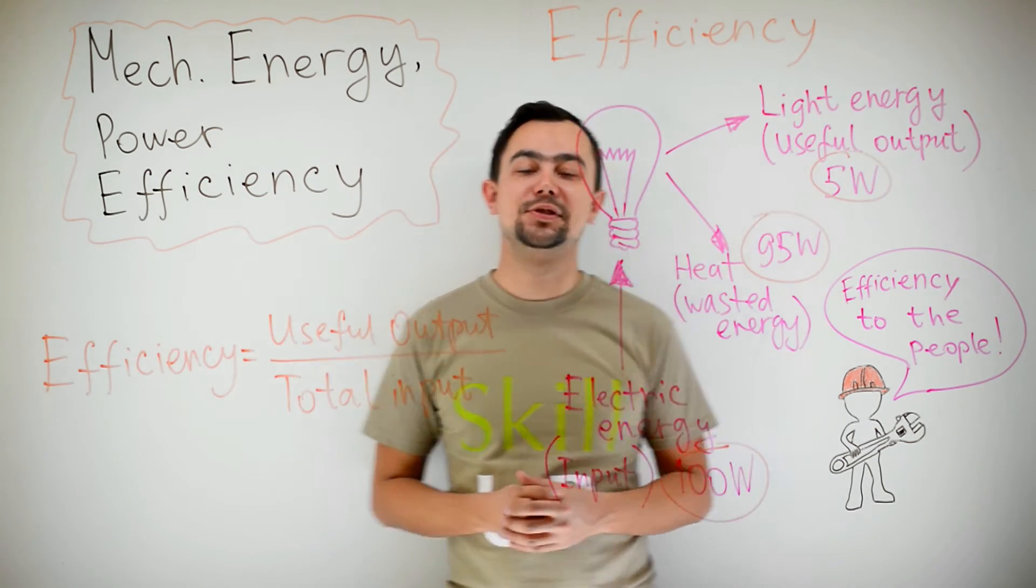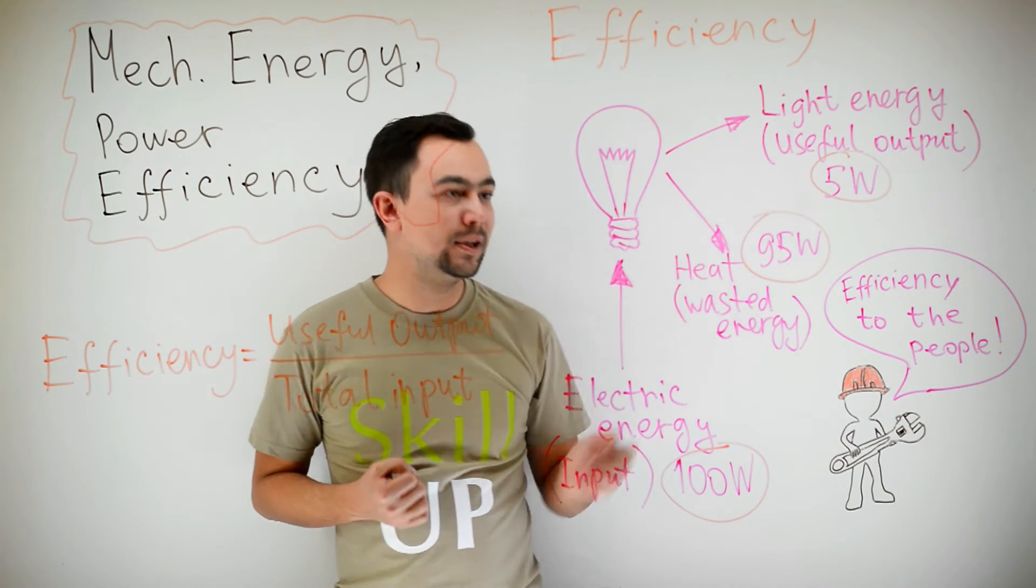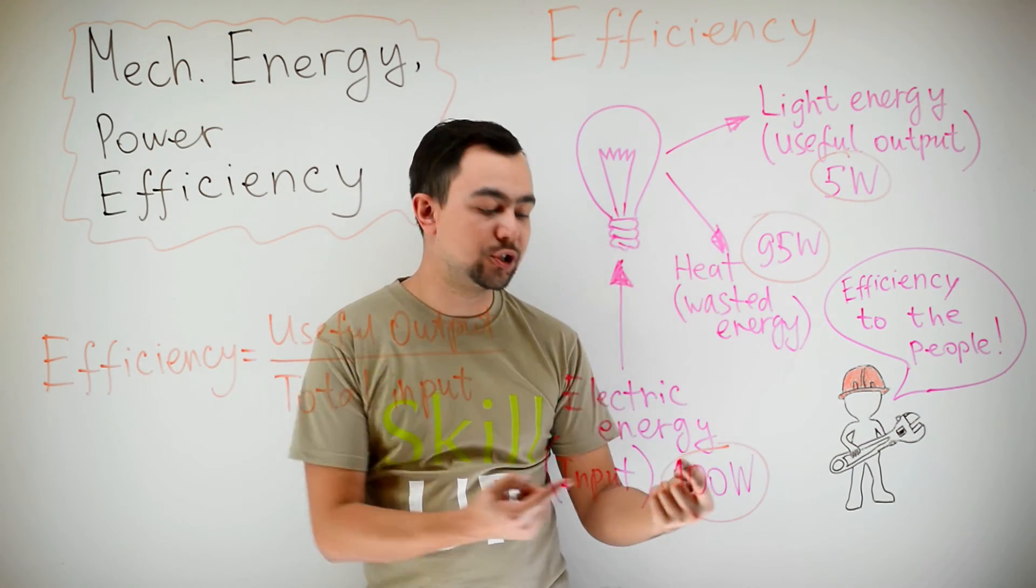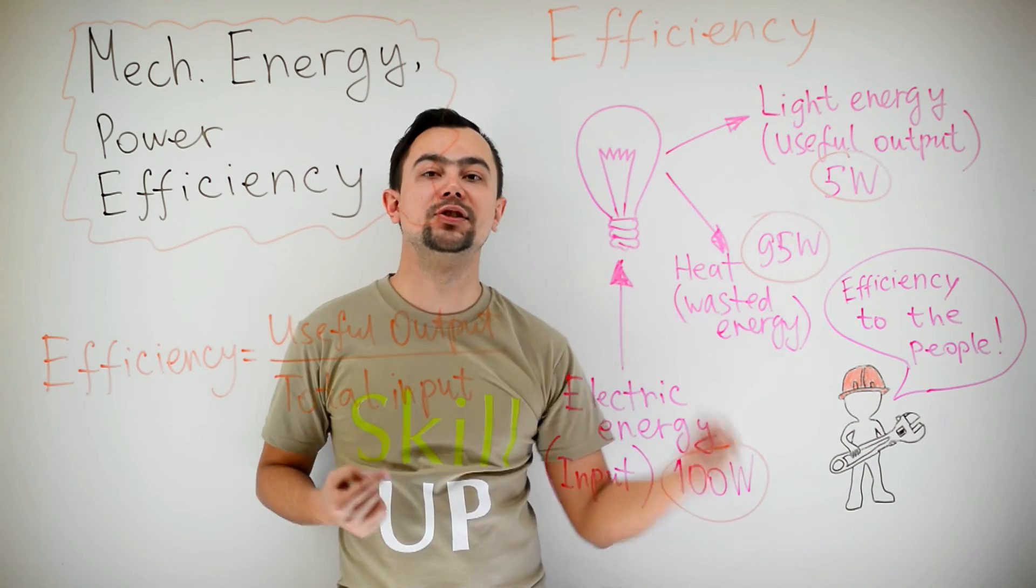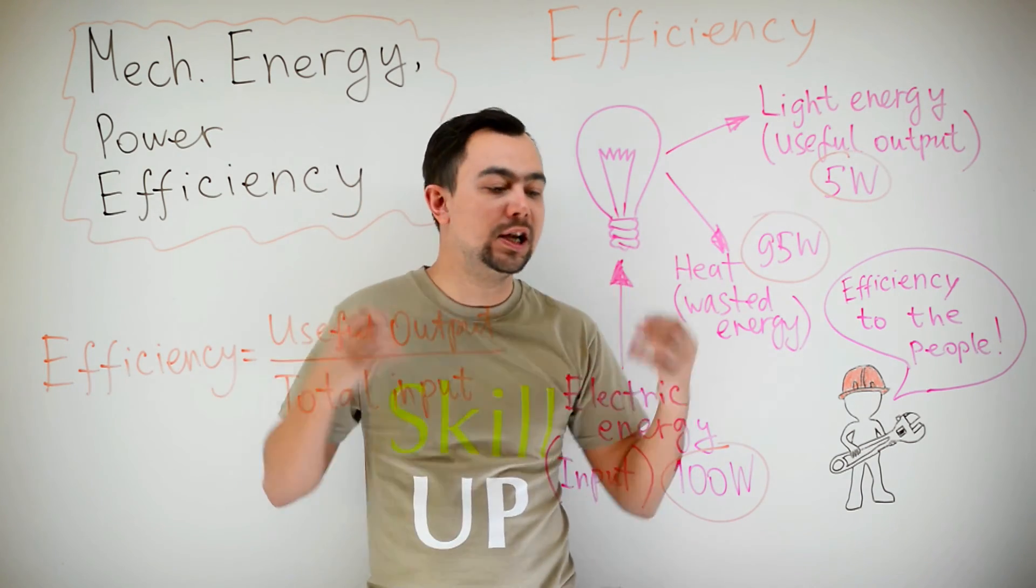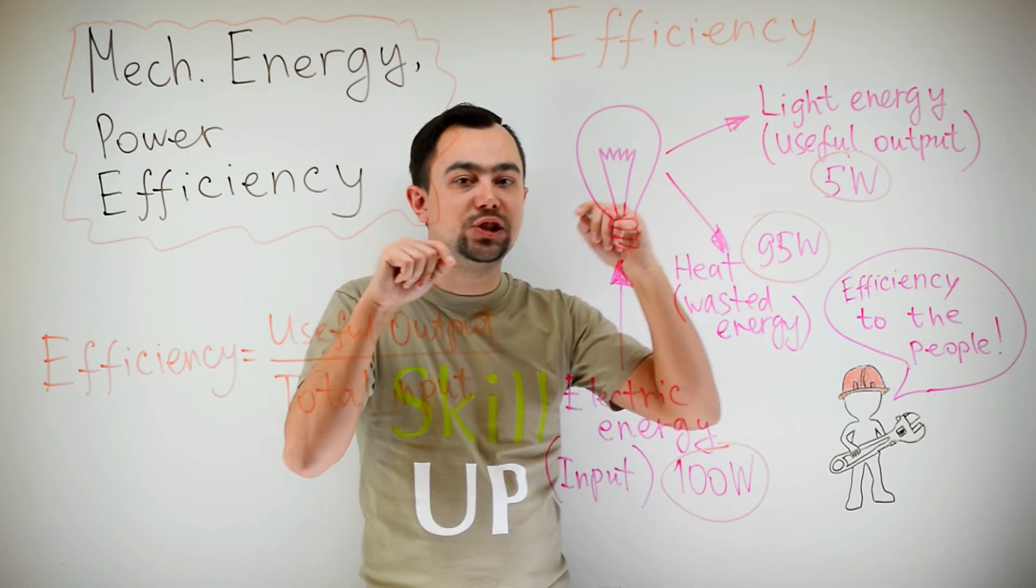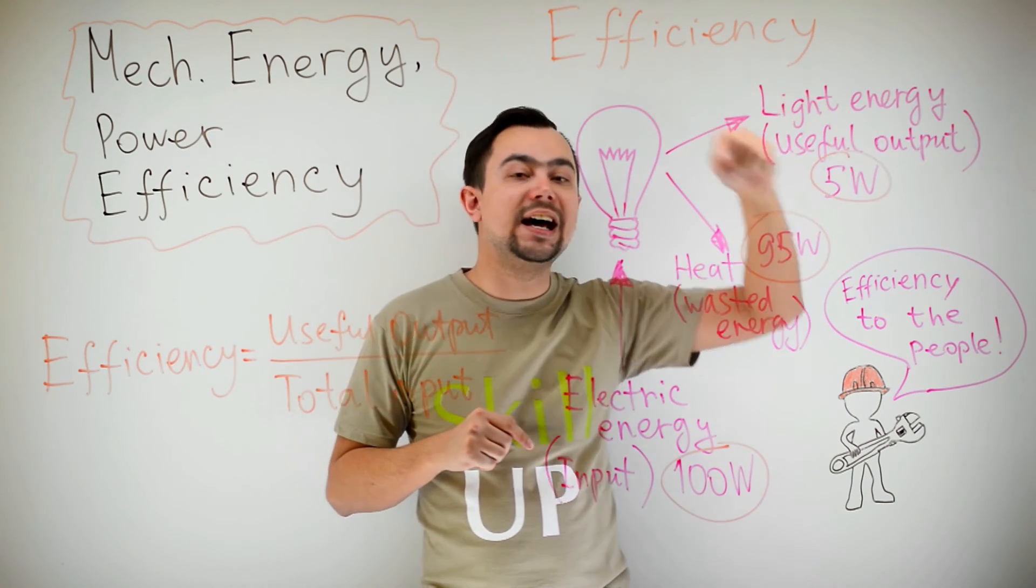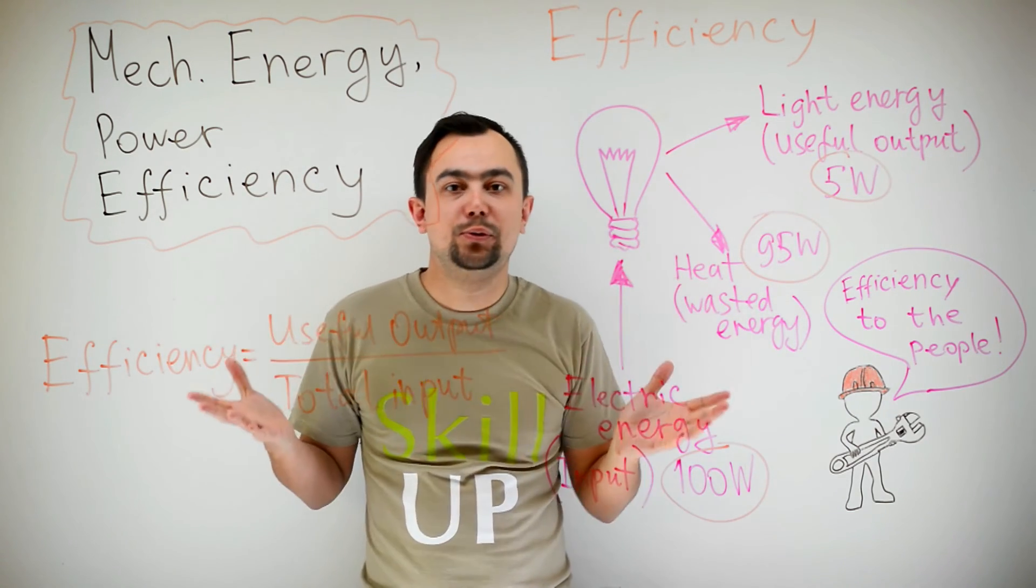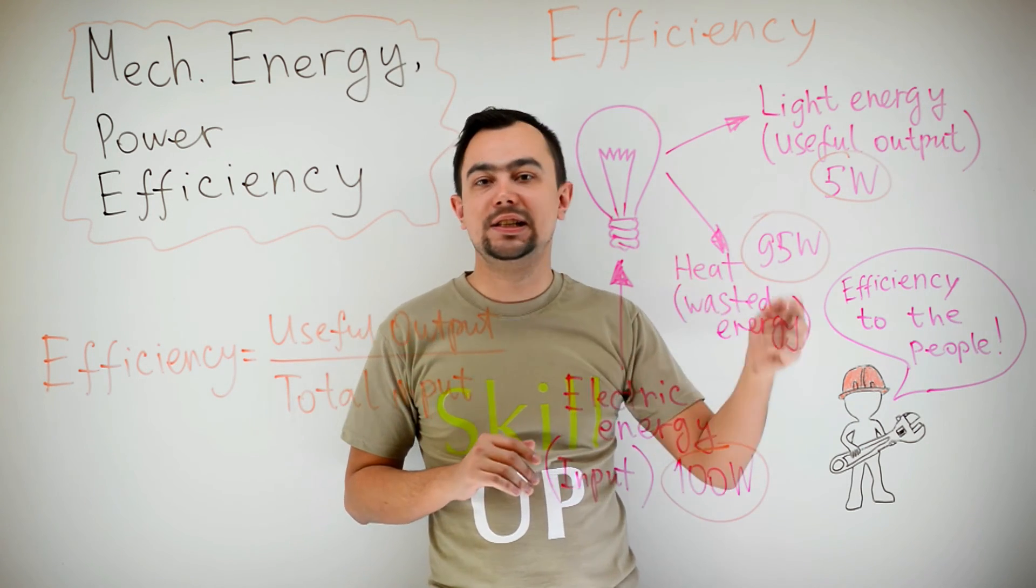The last thing I want to discuss with you today is efficiency. Let's look at this example. This is a light bulb. When it works, the total electric energy input is 100 watts. So, 100 joules of electrical energy per second goes into the light bulb. This energy is then dissipated as light and heat. Well, if we are speaking of an electric light bulb, we don't think that heat is useful.